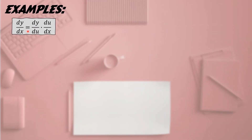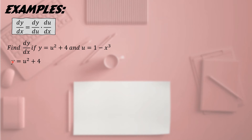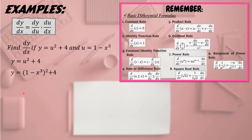Let's have another example using the chain rule formula. Find dy/dx if y = u² + 4 and u = 1 - x³. Using the shortcut method, substitute u into y: y = (1 - x³)² + 4. The exponent 2 must be outside the parentheses, and then we find dy/dx using this formula.